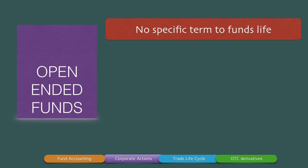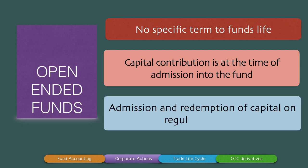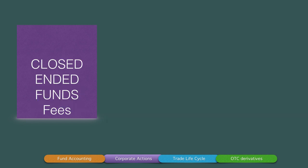In an open-ended fund, there is no specific term to the fund's life — the fund is wound up when the partners decide to do so. There is no predetermined life, so funds can wind up without any set term. The capital contribution is at the time of admission into the fund. The concept of capital commitment is very exclusive to a closed-ended fund. In an open-ended fund, the terms used are capital contribution, and admission and redemption of capital take place at regular intervals — the investor can choose when to exit.